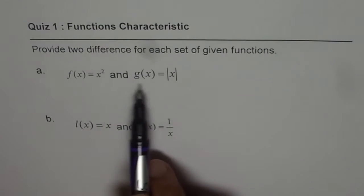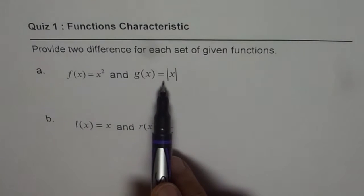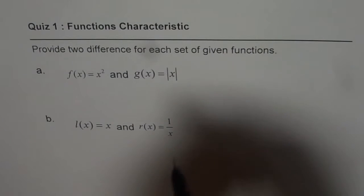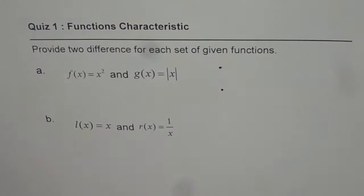So we have taken two functions which are very similar, f of x equals to x squared and g of x equals to absolute x. You need to find at least two differences between these two functions.